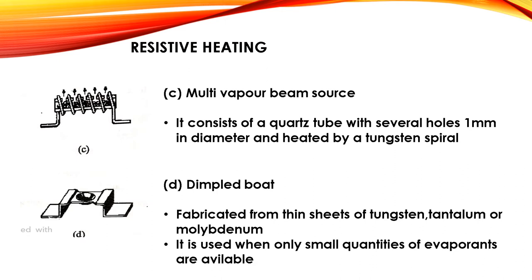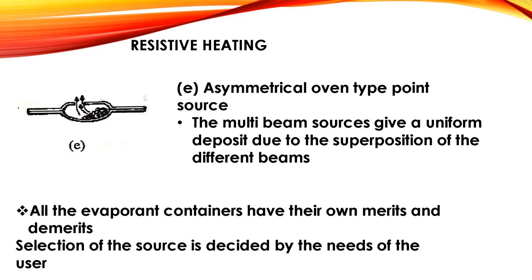Figure C is the multi-vapor beam source. It consists of a quartz tube with several holes 1 mm in diameter, heated by a tungsten spiral. Figure D is the dimpled board, fabricated from thin sheets of tungsten, tantalum, or molybdenum; it is used when only small quantities of evaporants are available. The fifth type is the asymmetrical oven type point source. Multi-beam sources give a uniform deposit due to the superposition of different beams. All evaporant containers have their own merits and demerits, and the selection of source is decided by the needs of the user.